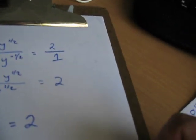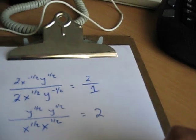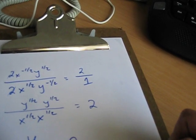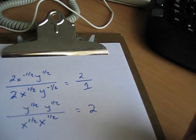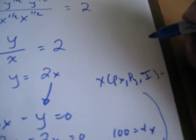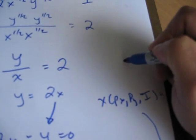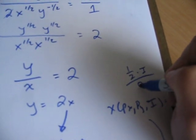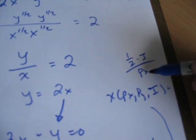Again, with Cobb-Douglas, one of the nice properties is the demand for x, as it depends on prices and income, is equal to that exponent, which in this case is equal to 1 half, times income divided by the price of x. So which price of x here was 2, so income divided by 4 is 25.